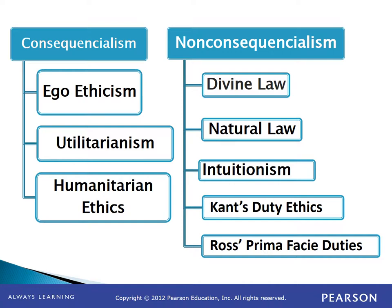On the right side of the chart are the non-consequentialist theories, which we'll get to in Chapter 3. This chart is a helpful tool — you might want to print it out for tests or when evaluating the motion pictures and documentaries used in this course, because it's easy to confuse the two categories. People will sometimes describe a character as a non-consequentialist and then identify that same character as an egoethicist.